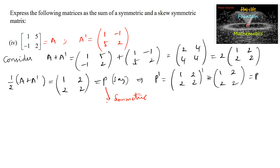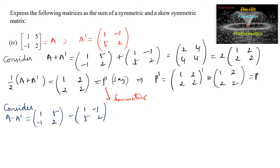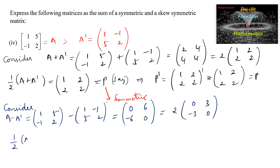Now consider A minus A transpose: [1,5;-1,2] minus [1,-1;5,2] = [0,6;-6,0]. Taking 2 as common, we get [0,3;-3,0]. So 1/2 times of A minus A transpose equals [0,3;-3,0]. Let this be Q.